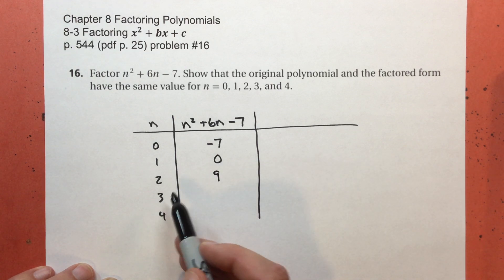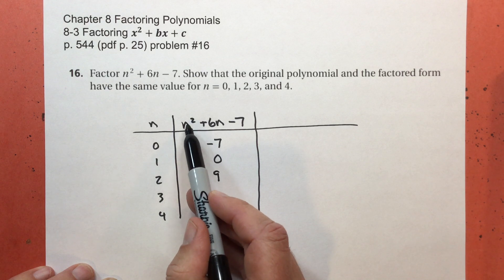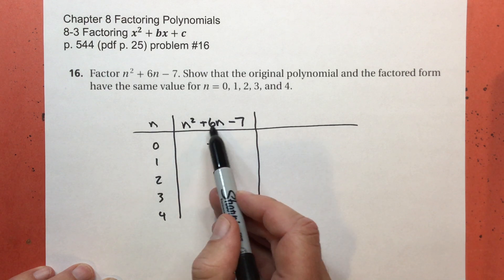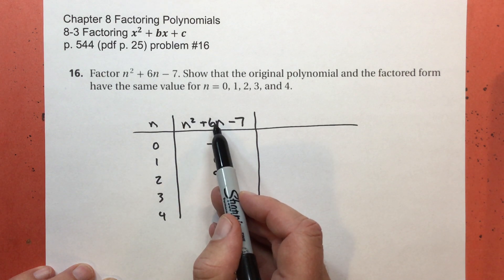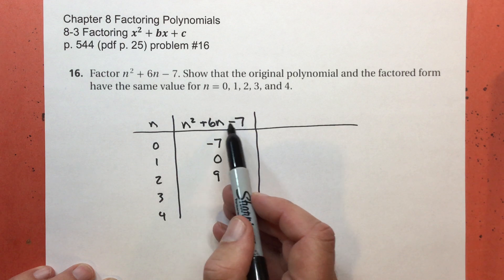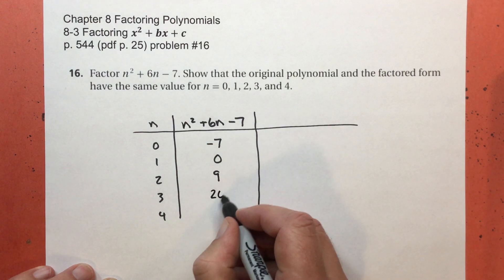Let's try 3. 3 to the second power is 9. 6 times 9 is, excuse me, 6 times 3 is 18. 9 plus 18 is 27. 27 subtract 7 is 20.